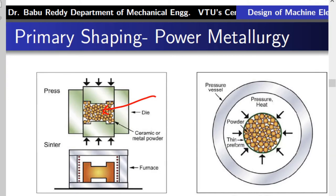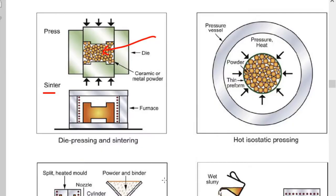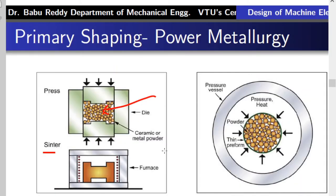In powder metallurgy processes, particles of material are joined together by applying pressure and heat to form a solid mass. It consists of two steps: first, giving a primary shape by compressing powder into a given shape; second, sintering — placing the shaped piece in a furnace and heating it. In die pressing, ceramic or metal powder is compressed between dies to take a basic shape, then brought into a furnace where, because of heating, it solidifies and gains strength.